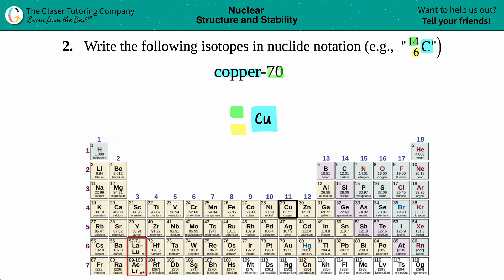Now whenever they're telling you copper-70 or carbon-14 or oxygen-16, that number is always the atomic mass. It's the bigger number out of the two numbers that are going to be here.